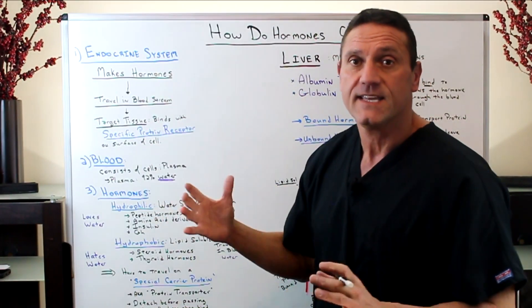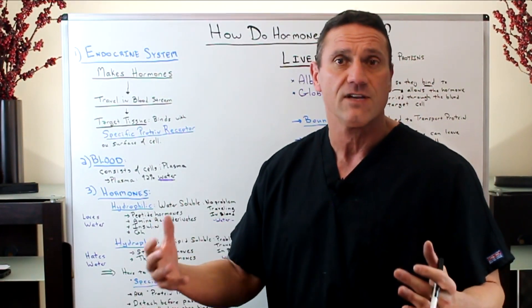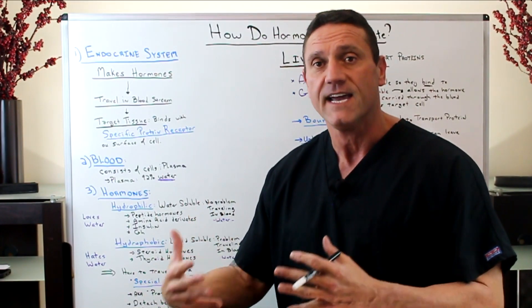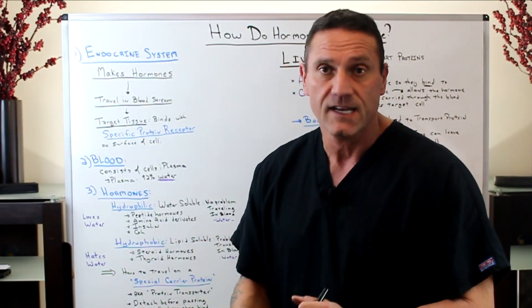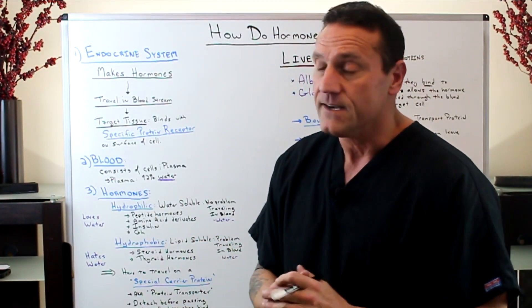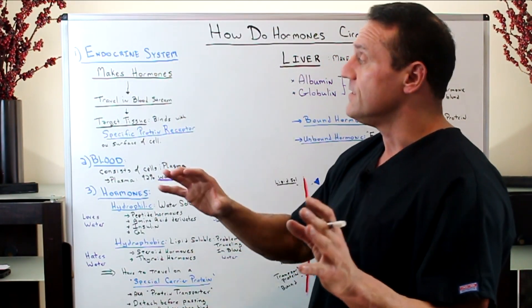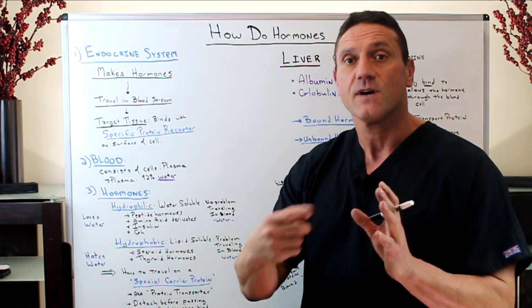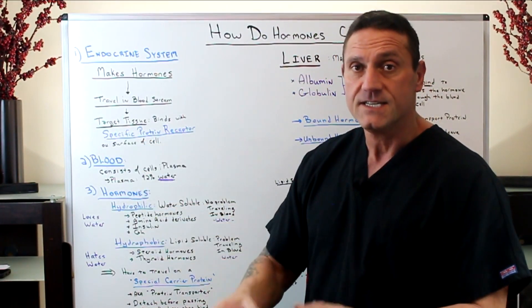Hormones are made in the endocrine system. We have different systems — the muscular system, the nervous system, and the endocrine system, which produces hormones: thyroid hormones, sex hormones, insulin, cortisol, and all that. So the endocrine system makes the hormones, then they travel throughout the bloodstream to get to the target tissue.